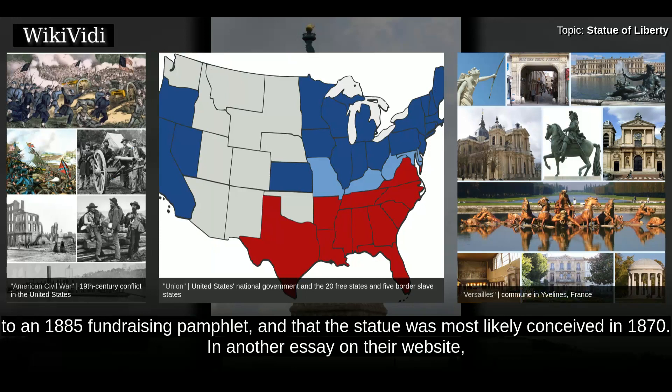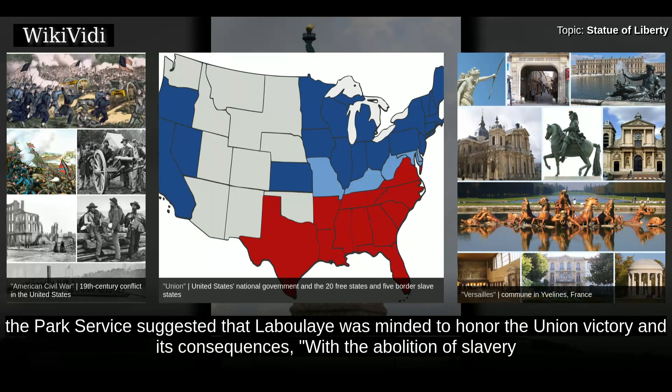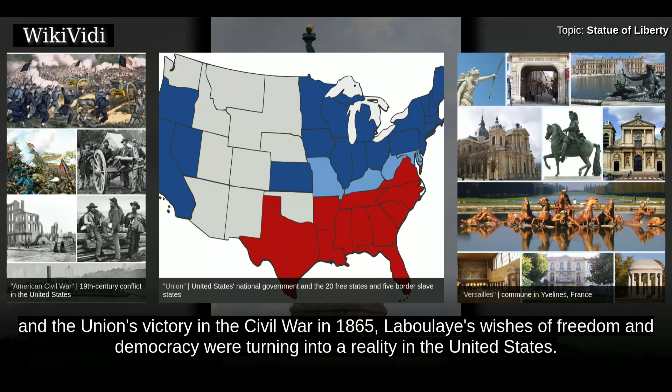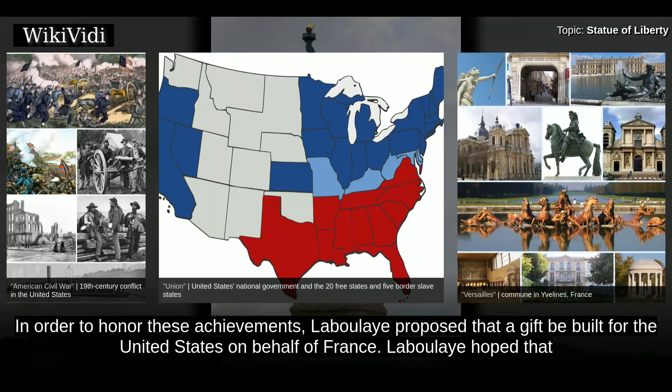In another essay on their website, the Park Service suggested that Laboulaye was minded to honor the Union victory and its consequences with the abolition of slavery. With the Union's victory in the Civil War in 1865, Laboulaye's wishes of freedom and democracy were turning into reality in the United States. In order to honor these achievements, Laboulaye proposed that a gift be built for the United States on behalf of France.